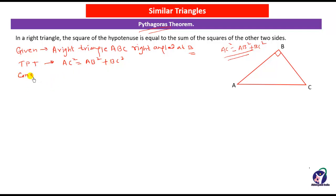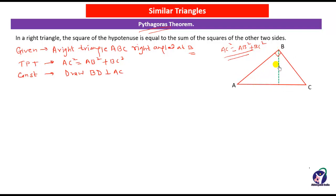To prove this we will do one construction: draw BD perpendicular to AC. So we draw BD perpendicular to AC, and this angle will also be 90 degrees. Now we will see the proof.